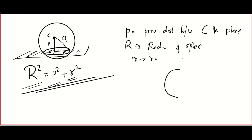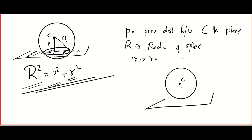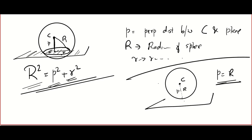So to summarize: when a sphere and a plane intersect, a circle is formed; the family of spheres through that circle is S + λP = 0; and the intersection condition is R² = p² + r². The tangent condition is simple: if C is the center of the sphere and p is the perpendicular distance from the center to the plane, then p = R. I'll be back soon with very important problems on spheres.